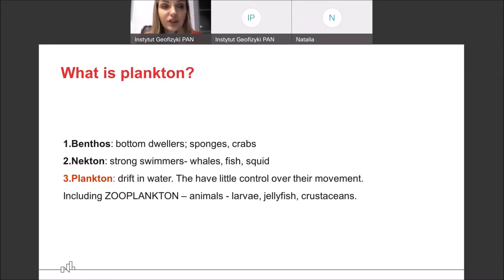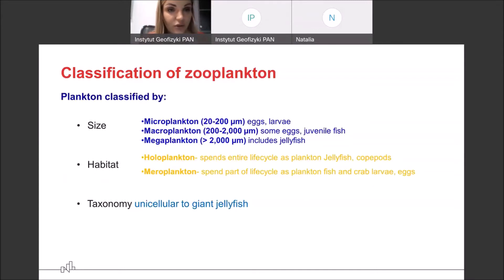And others that live near the bottom, near the ocean bed, for example, are benthos, which, for example, sponges or crabs. Also plankton, planktonic organisms are typically classified into many size categories according to a scale, so-called Sieburth scale.